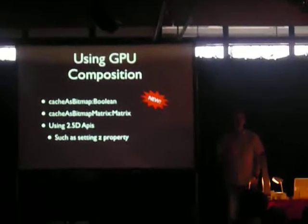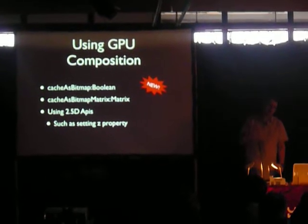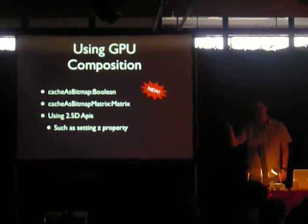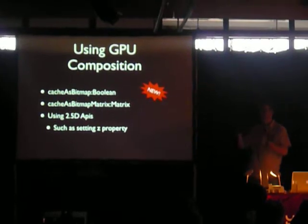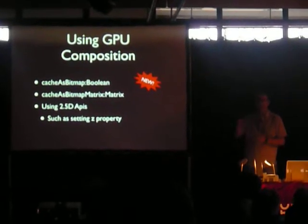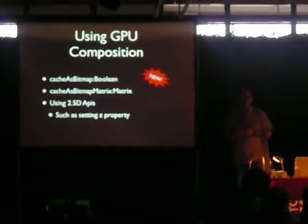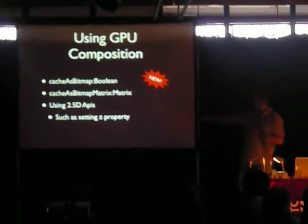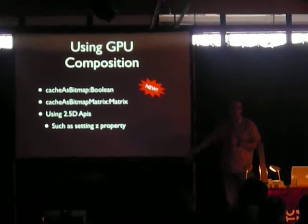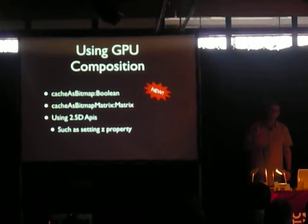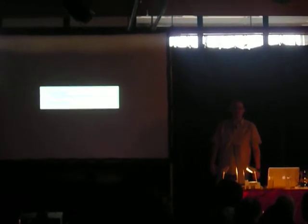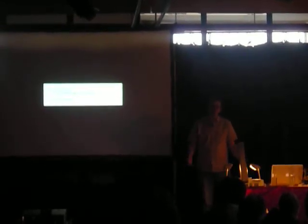CacheAsBitmapMatrix lets you set a default matrix for how that's going to be handled, and that's passed on to the GPU. So then transformation is going to be handled by the GPU. If you have a vector that's been set to CacheAsBitmap and you rotate it, it's not going to re-render that. If you use any of the 2.5D APIs, such as the Z properties, those are also accelerated. In order for all this to work, you need to set the render mode to GPU, which you can do in the platform.